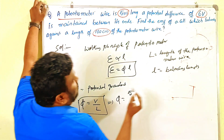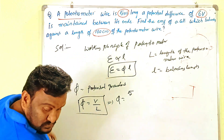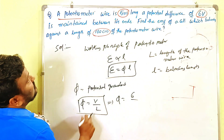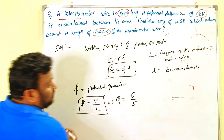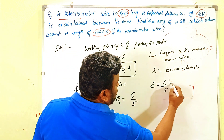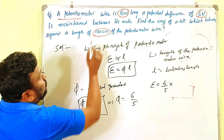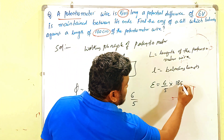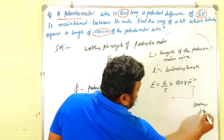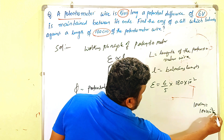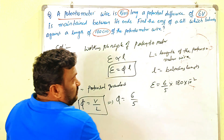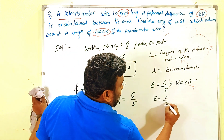The potential gradient phi equals V over L, which is six volts over five meters. Then epsilon equals phi into l, that is six by five into 180 centimeters. Converting 180 centimeters to meters: 180 centimeters equals 180 into 10 to the power of minus two meters. So epsilon equals six by five into 18 into 10 to the power of minus one.